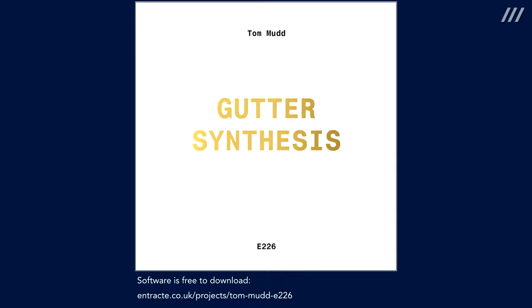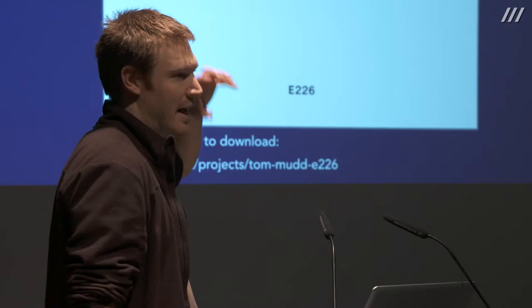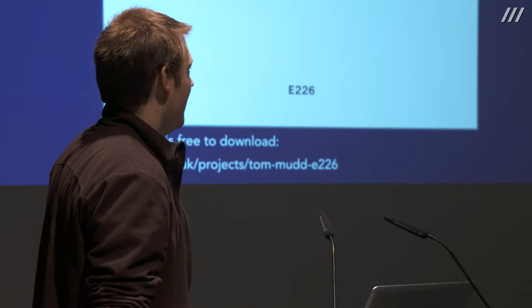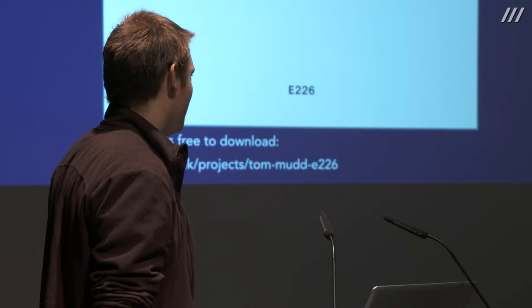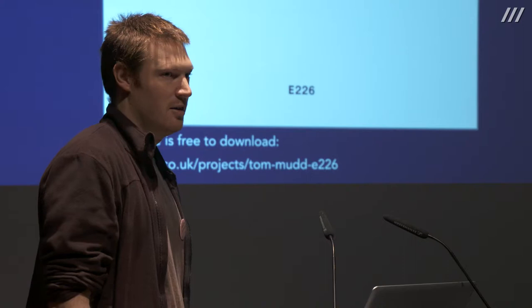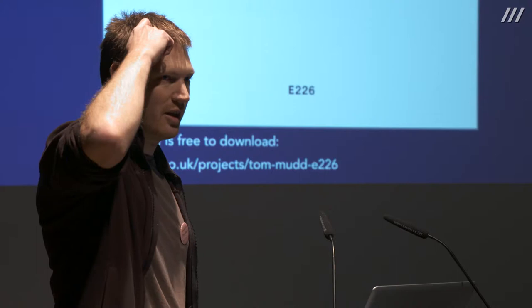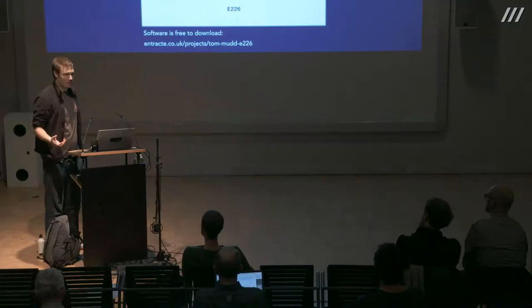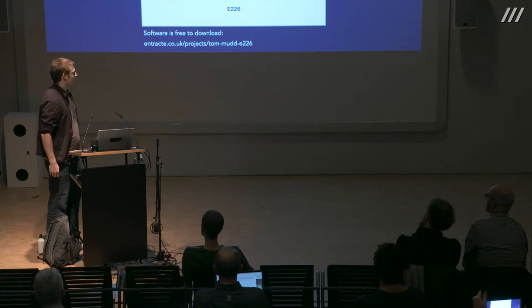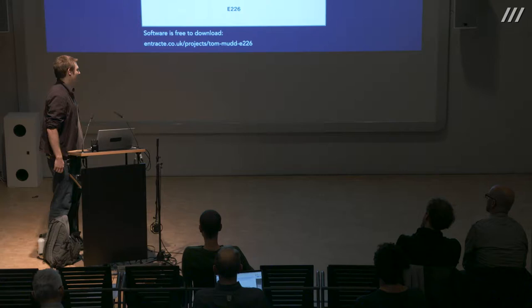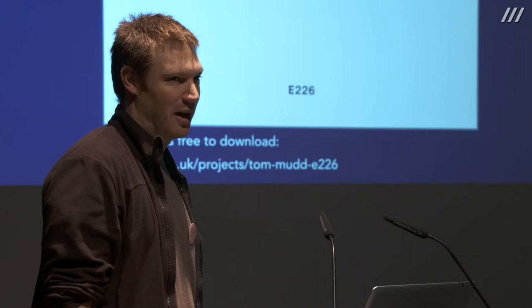The project today is the piece from yesterday's concert, which has been going on for a few years and was finally released this year on CD as 'Gutter Synthesis' on the On Track label. It's based around a specific synthesis method I'll talk about in a minute. The software is available to download — you can google 'Tom Mudd Gutter' to find it. It's a Max patch and it's a standalone. For me the interesting part is: does this program just do the same thing every time, or if someone else uses it, does it do something different?